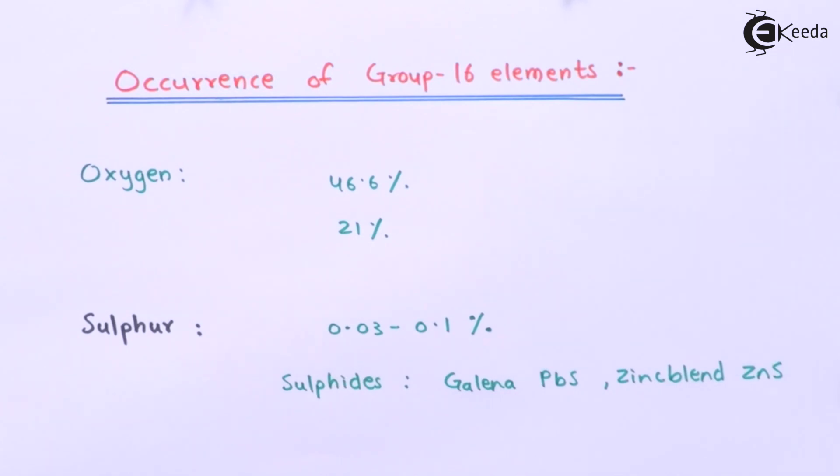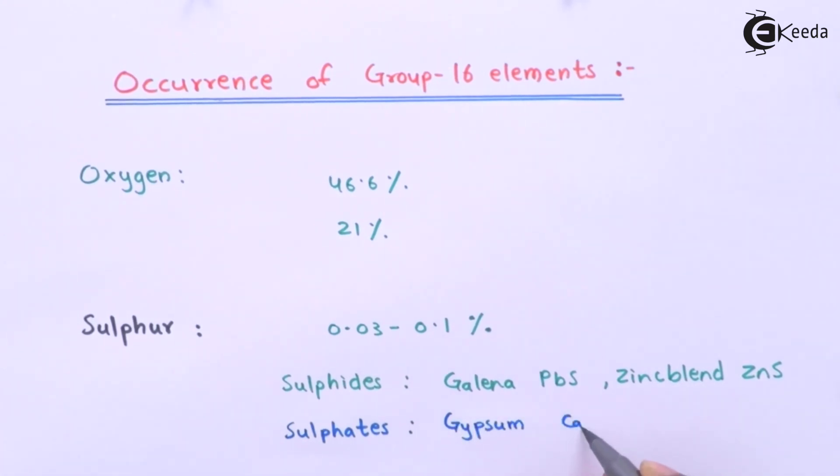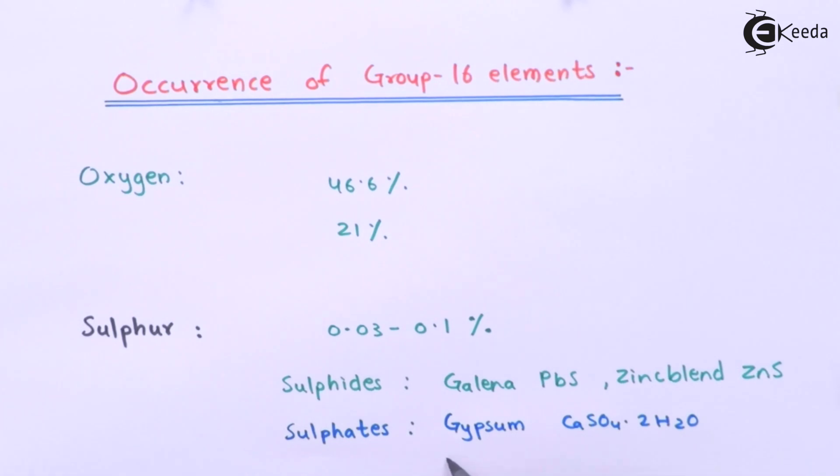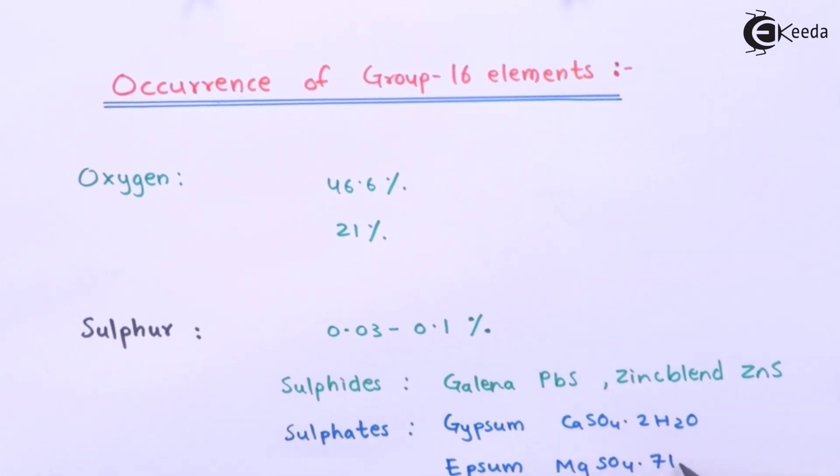As I mentioned earlier, it is also found in sulfates. The common example where we can find sulfur is gypsum salt, that is CaSO4·2H2O. And epsom salt, which consists of sulfur in the form of MgSO4·7H2O. Therefore, these are the occurrences and where we can find sulfur.